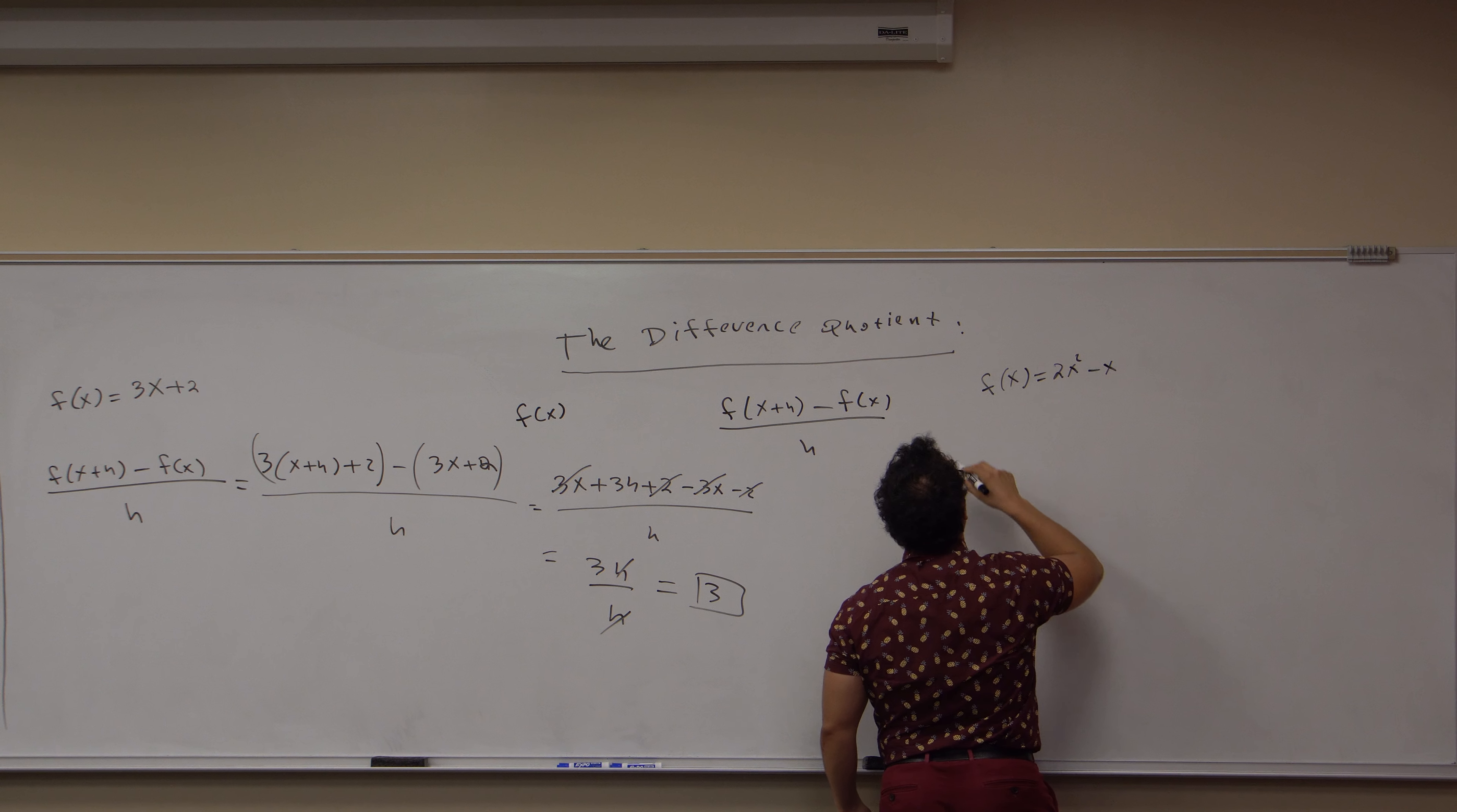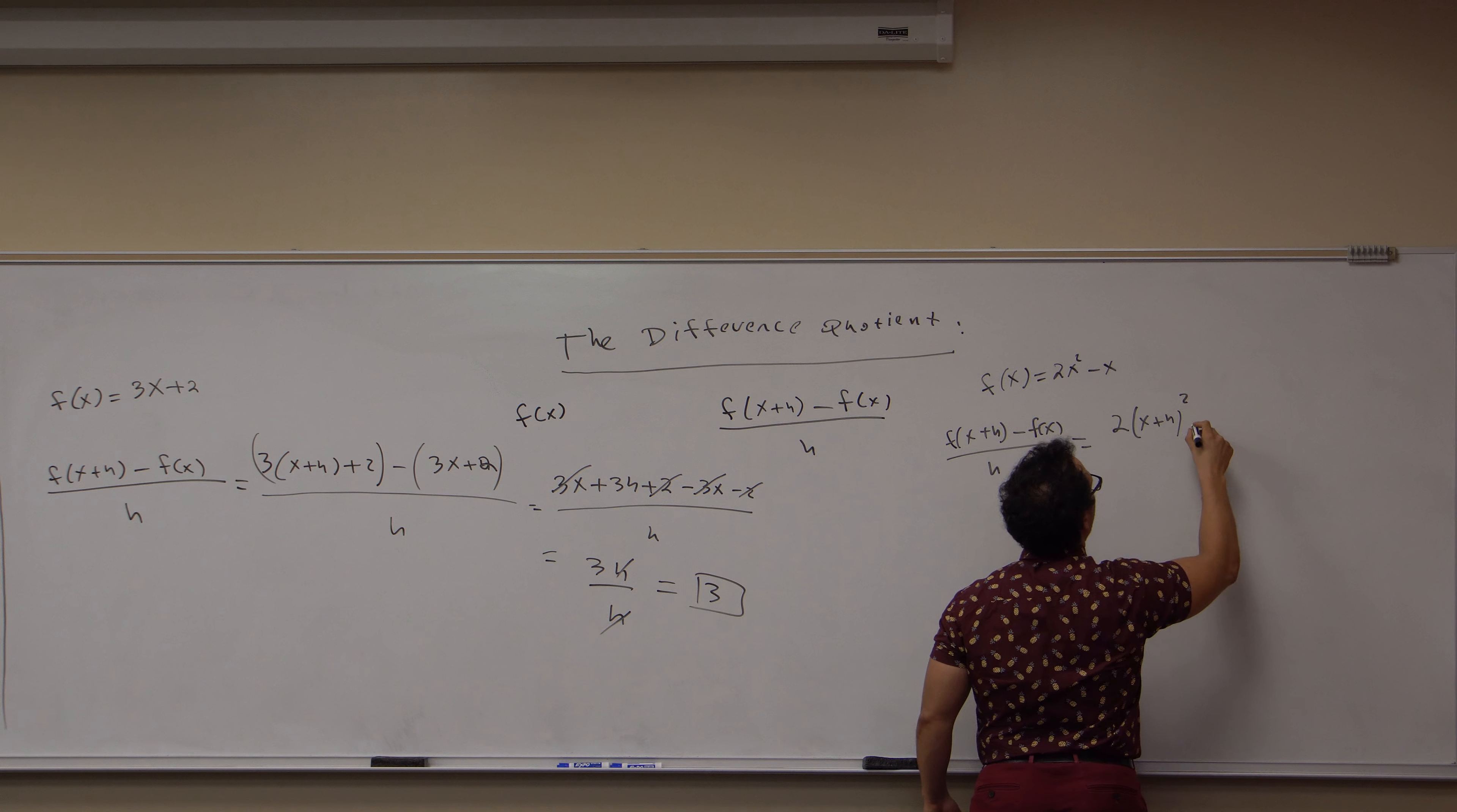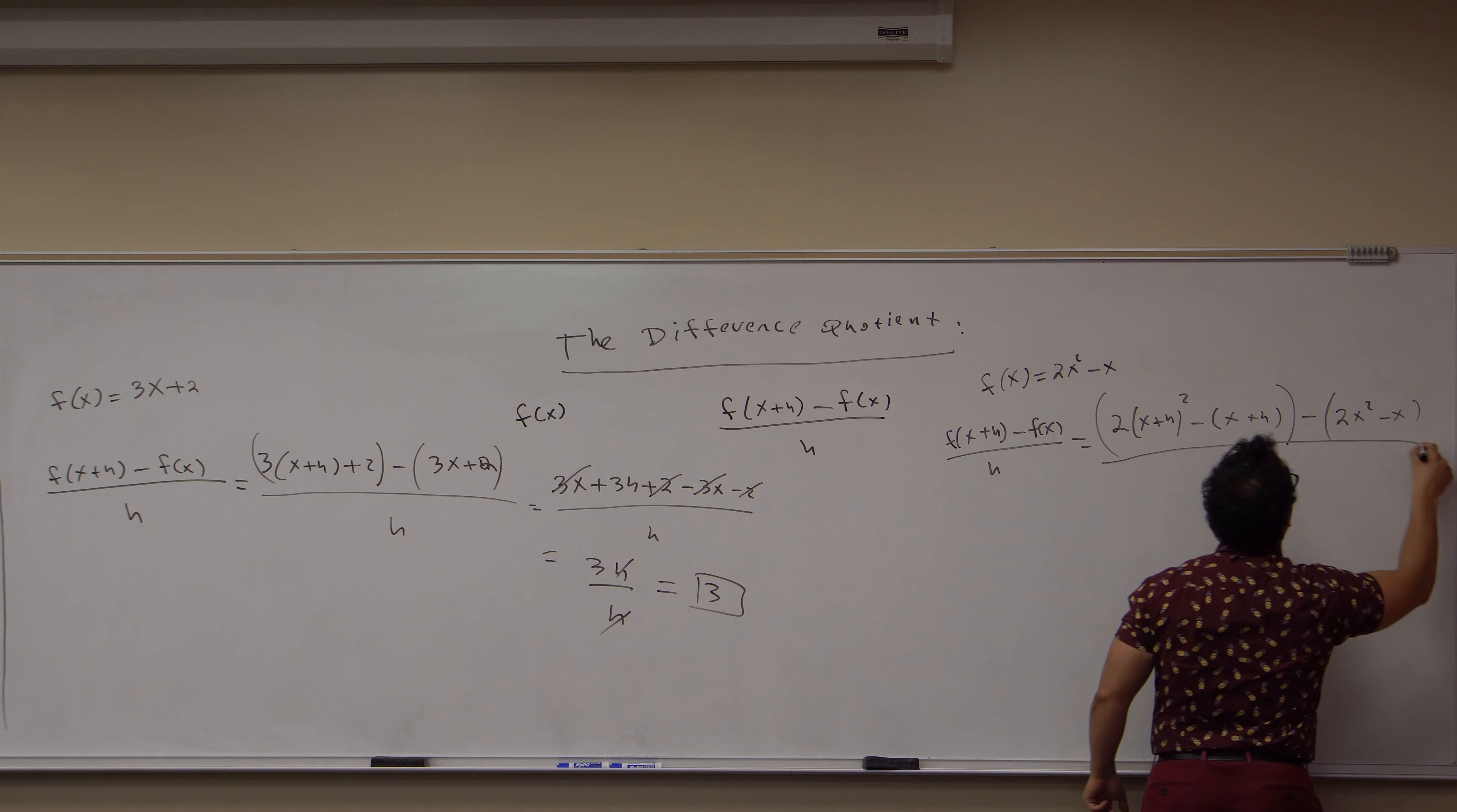Let's take its difference quotient. Well f of x plus h minus f of x all over h is now 2 times the quantity x plus h quantity squared minus x plus h, all of this in parentheses, minus our original function f of x: 2x squared minus x, all over h.